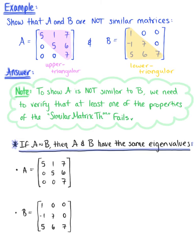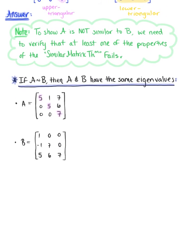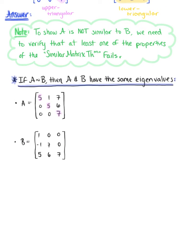Simply by looking at the diagonal entries of matrix A, we can see the eigenvalues are as follows. We can see that lambda sub one is actually going to be equal to lambda sub two, which is both five, and that lambda sub three is equal to seven.